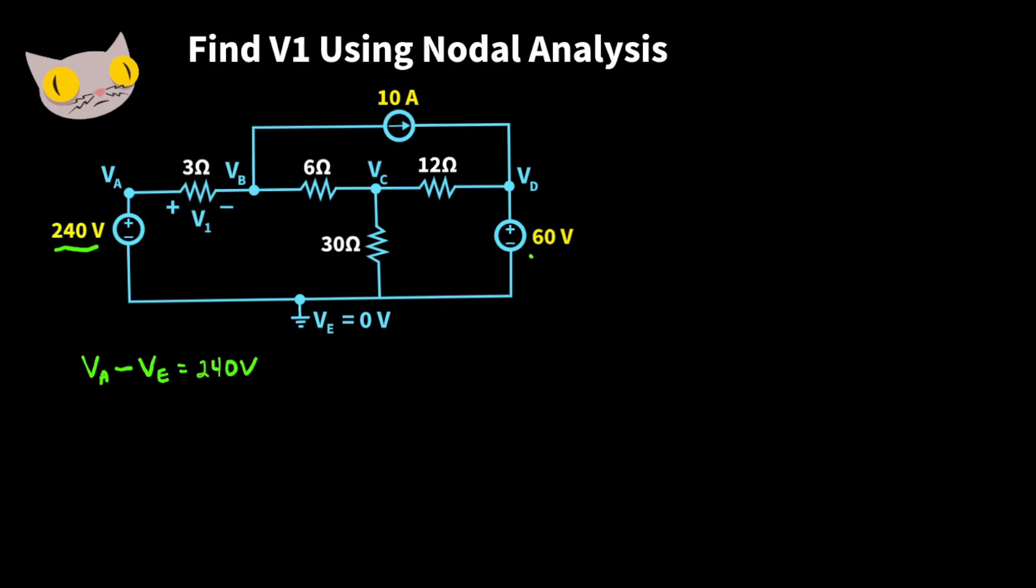Same thing for the 60 volt source. Its high potential is VD. Its low potential is VE. So we can say VD minus VE is equal to 60 volts.